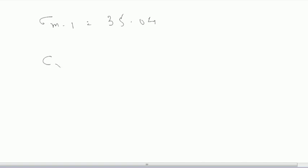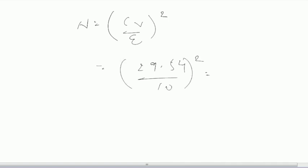Now putting down all these values in your CV, then 100 into 35.04 upon 118.6. This will give you the value as 29.54. Put down this value in your formula of calculating number of optimal gauges, which says N equals CV upon epsilon whole square. So here 29.54 upon 10, this whole square, which will come out to be 8.7. Approximately you can take the value as 9. Obviously you cannot install 8.7 rain gauges. Either it can be 8 or 9. So we will take the safer side, 9 rain gauges.